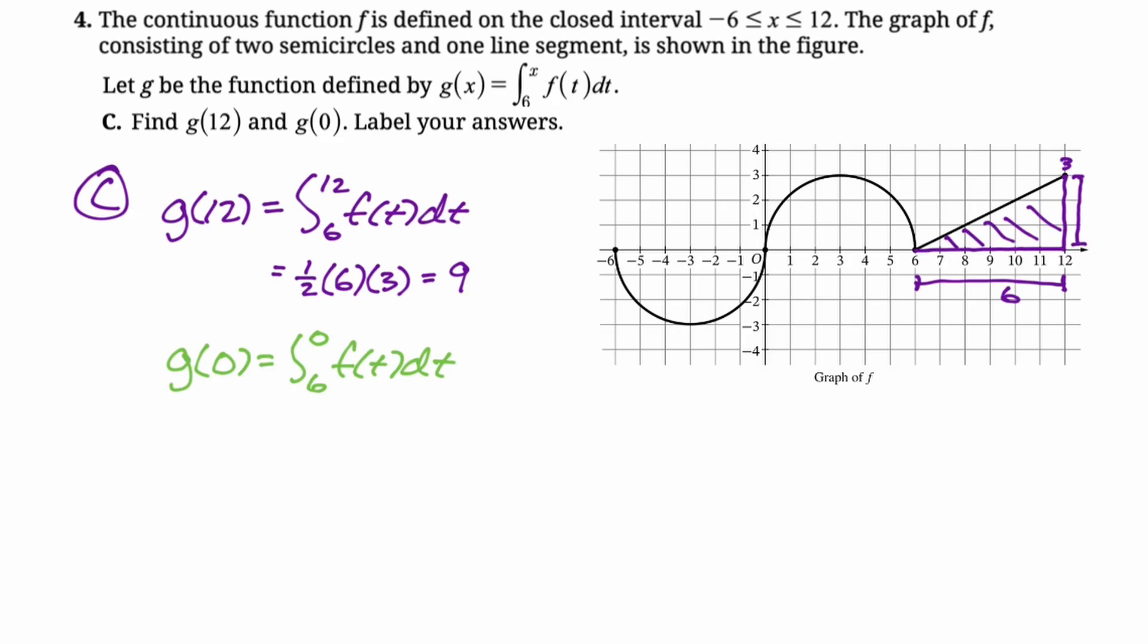Now, 6 is bigger than 0, so we're going to flip the bounds and change the sign, so it's the negative of the integral from 0 to 6 of f of t dt. Now we need to figure out what's going on. From 0 to 6, it's this semicircular region. The radius of this region is 3, so the area of the whole circle would be pi r squared, so 9 pi, but we're only getting half of it. So I'm going to write down, it's negative 1 half pi r squared.